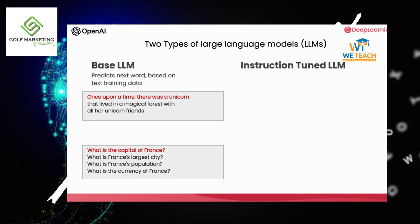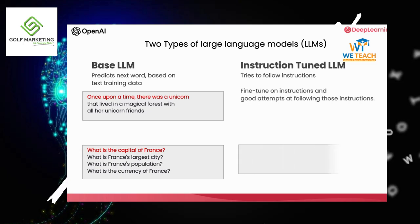In contrast, an instruction-tuned LLM — which is where a lot of momentum of LLM research and practice has been going — has been trained to follow instructions. So if you were to ask it 'what is the capital of France,' it's much more likely to output something like 'the capital of France is Paris.'